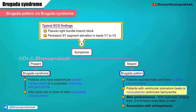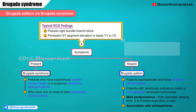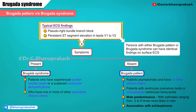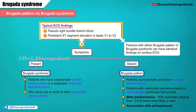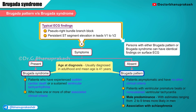Patients with ventricular premature beats or non-sustained ventricular tachycardia are generally not considered to have Brugada syndrome but only the Brugada pattern. Persons with either the Brugada pattern or the Brugada syndrome can have identical findings on the surface ECG. The Brugada ECG pattern is more common in men than in women, with estimates ranging from two to nine times more likely in men. Brugada pattern ECG and Brugada syndrome are usually diagnosed in adulthood, with a mean age of diagnosis of 41 years. Patients with schizophrenia appear significantly more likely to have Brugada pattern ECGs than the general population.